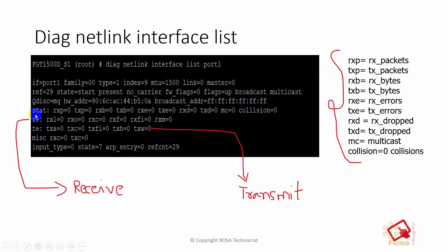The 'stat' line contains: rxp, txp, rxb, txb, txc, rxd, and txtd. RX stands for receive and TX for transmit. RXP means receive packets — how many packets have been received by this interface. TXP means transmit packets. The next two counters relate to bytes — the datagram size — representing the volume of data transmitted. The packet count will always be higher relative to bytes because one packet's count is just one, regardless of its size.